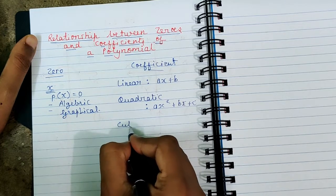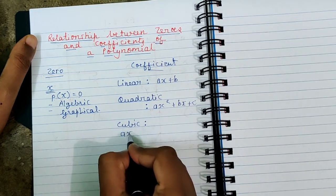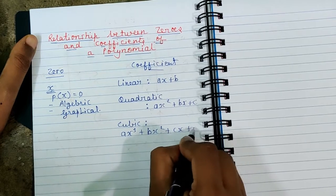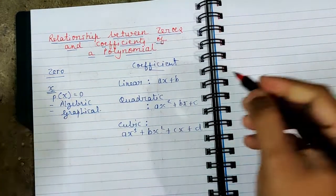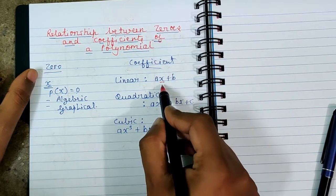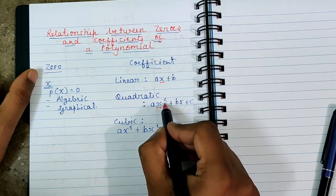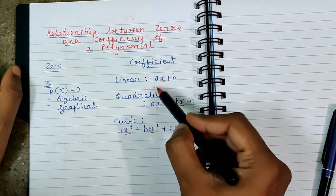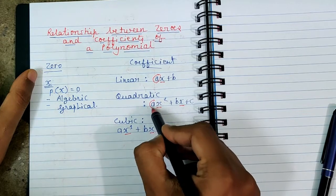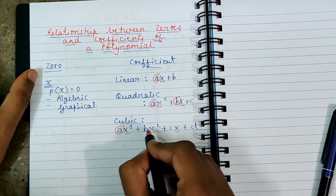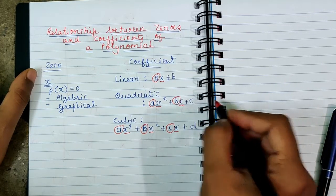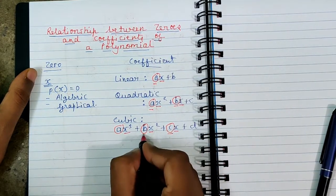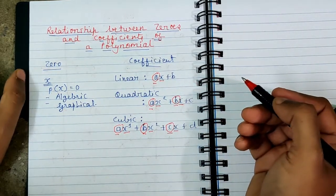And lastly, we saw the cubic polynomial with general equation ax³ + bx² + cx + d. Now, the variables here are x, x², and x³. Along with each variable, there is a constant term attached. These constant terms are actually called coefficients.